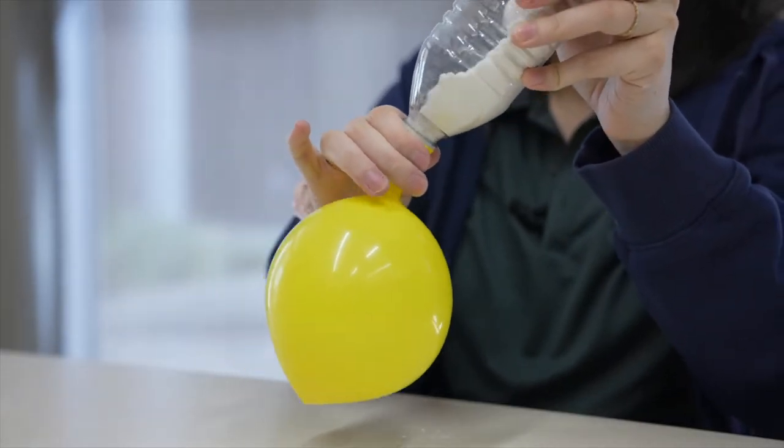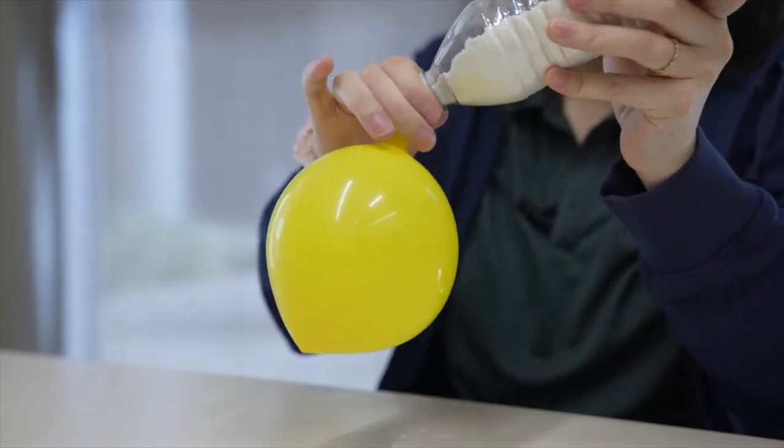Remove the balloon from the water bottle and slowly let the remaining air out. Tie a knot to keep the flour inside.